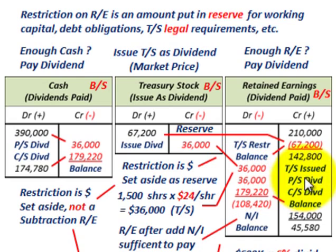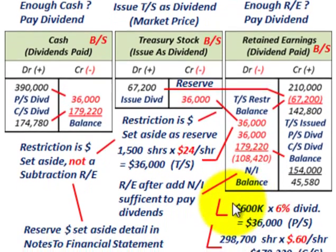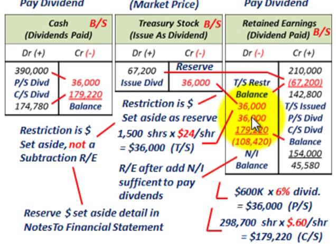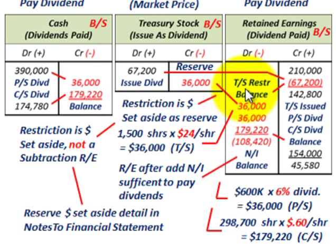Next is the current year preferred stock dividend. The $600,000 outstanding at a 6% dividend rate equals $36,000. We debit retained earnings by $36,000 for the preferred stock dividend, and the corresponding credit goes to cash — we're paying it in cash — reducing cash by $36,000.